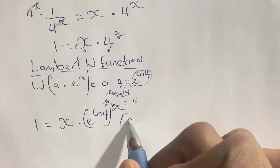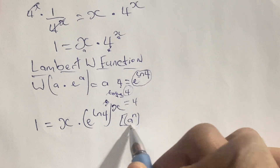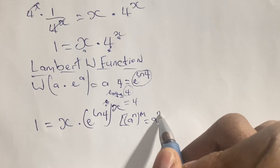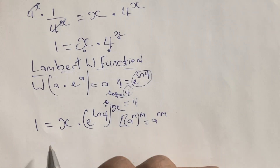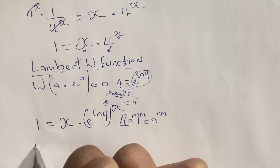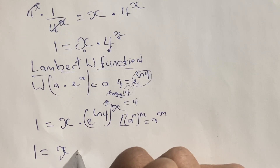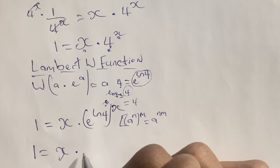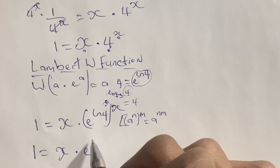Using the law of indices — a to the power of n in brackets raised to the power of m is the same as a to the power of n times m — we rewrite our equation. So we have 1 is equal to x times e to the power of x·ln 4.